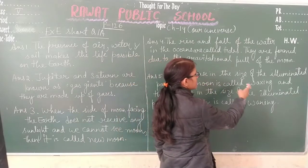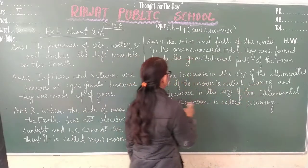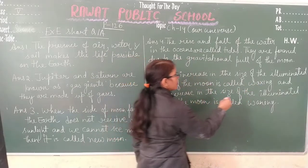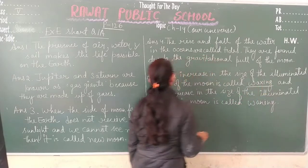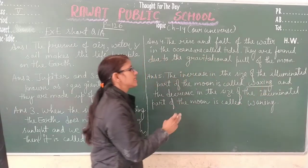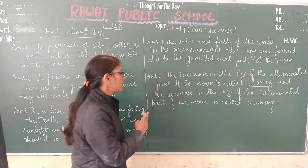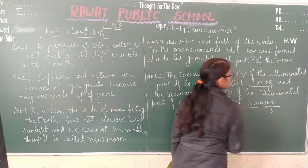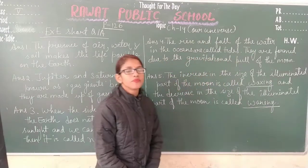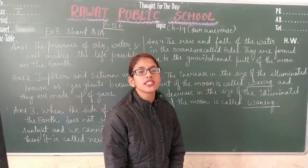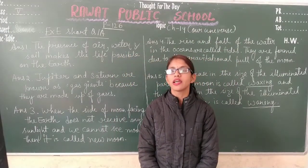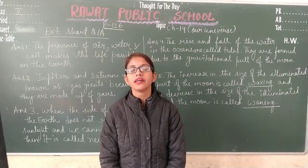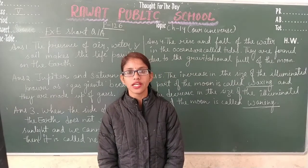The answer of question 5: the increase in the size of the illuminated part of the moon is called waxing, and the decrease in the size of the illuminated part of the moon is called waning. That is all about the answers of your exercise. Thank you and have a nice day.